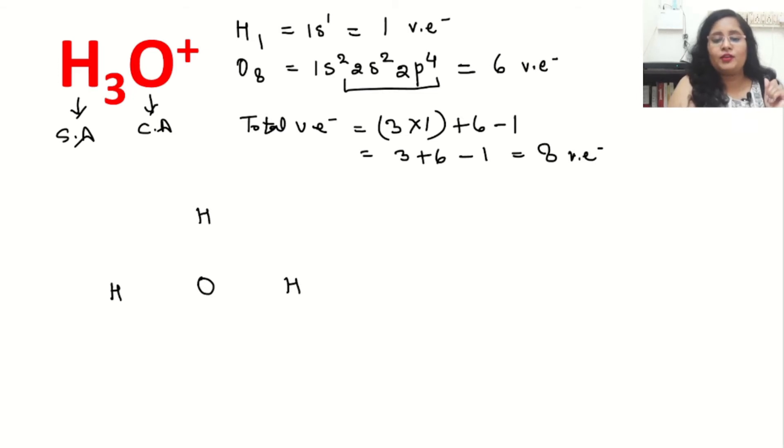Now, first thing we will do is make three bonds like that. Now three bonds we made, and we will count bond pair electrons. It will be 2 times the number of bonds, so 2 times 3, that is 6. So bond pair electrons are 6 in number.